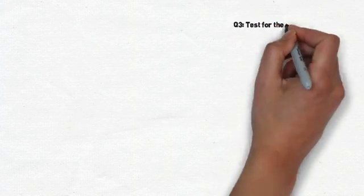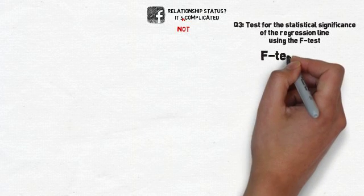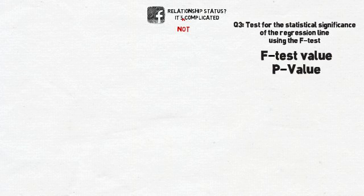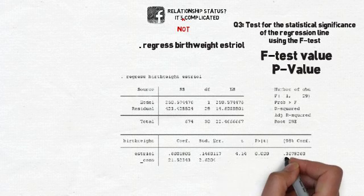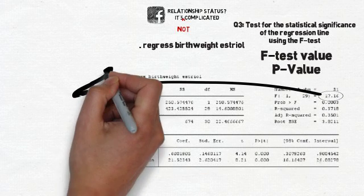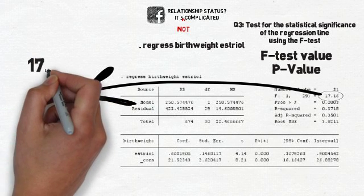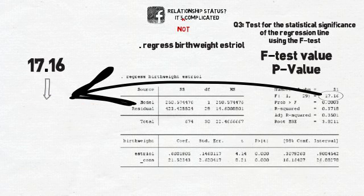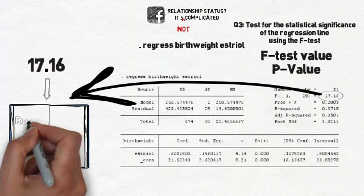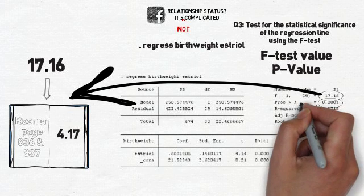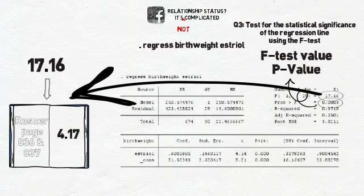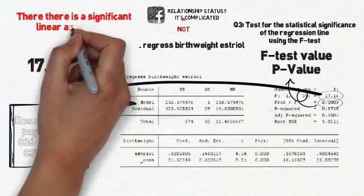Question 3 asks us to test for the statistical significance of the regression line using the F-test. We want to know whether the relationship between the two variables is significant. We run the F-test using 'regress birthweight esterol' and get the output chart. The F-test value is 17.16; when we look this up in the distribution chart in Rosner on pages 836–837, we get 4.17. Our p-value is 0.0003, which is clearly less than 0.05, so there is a significant linear association between birth weight and estriol.